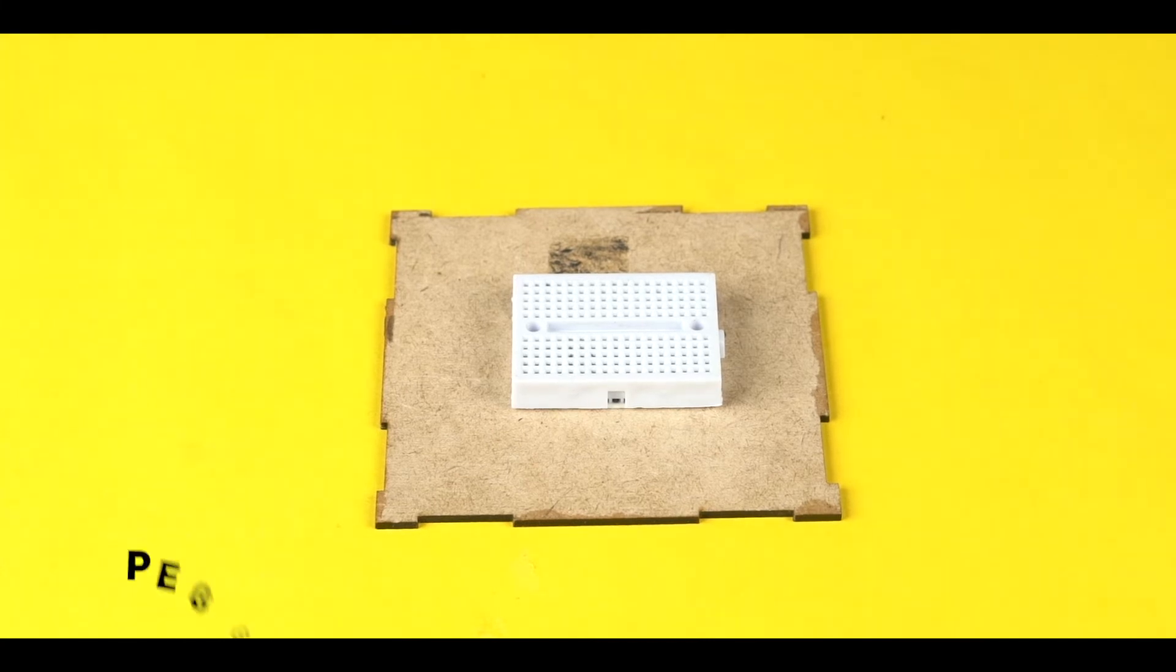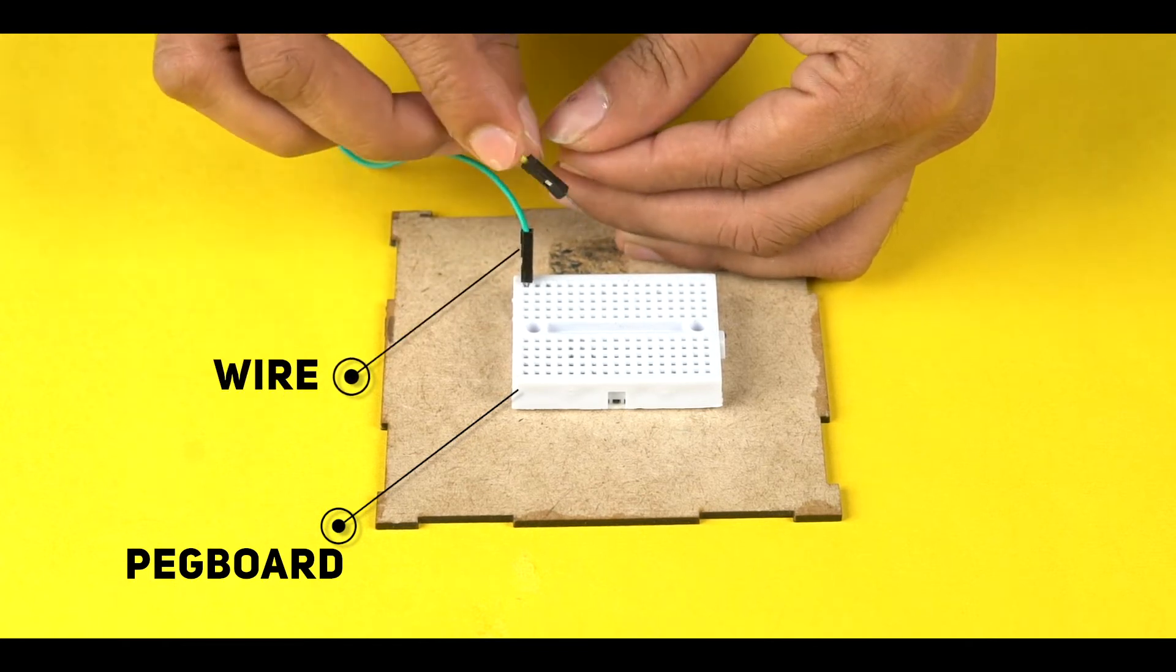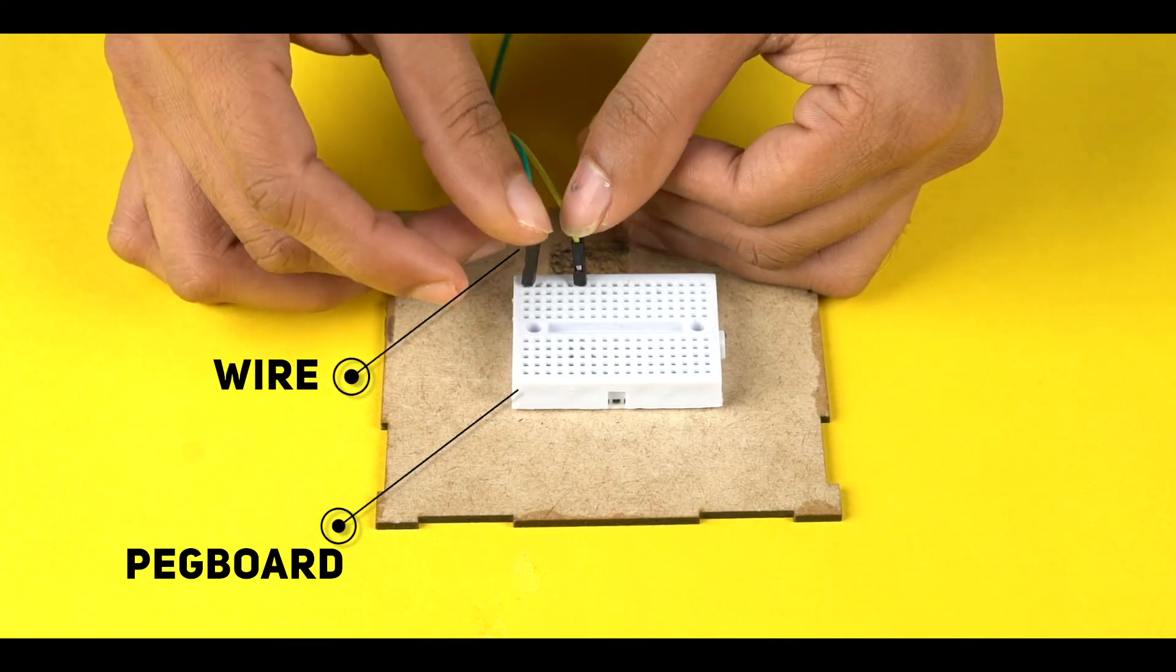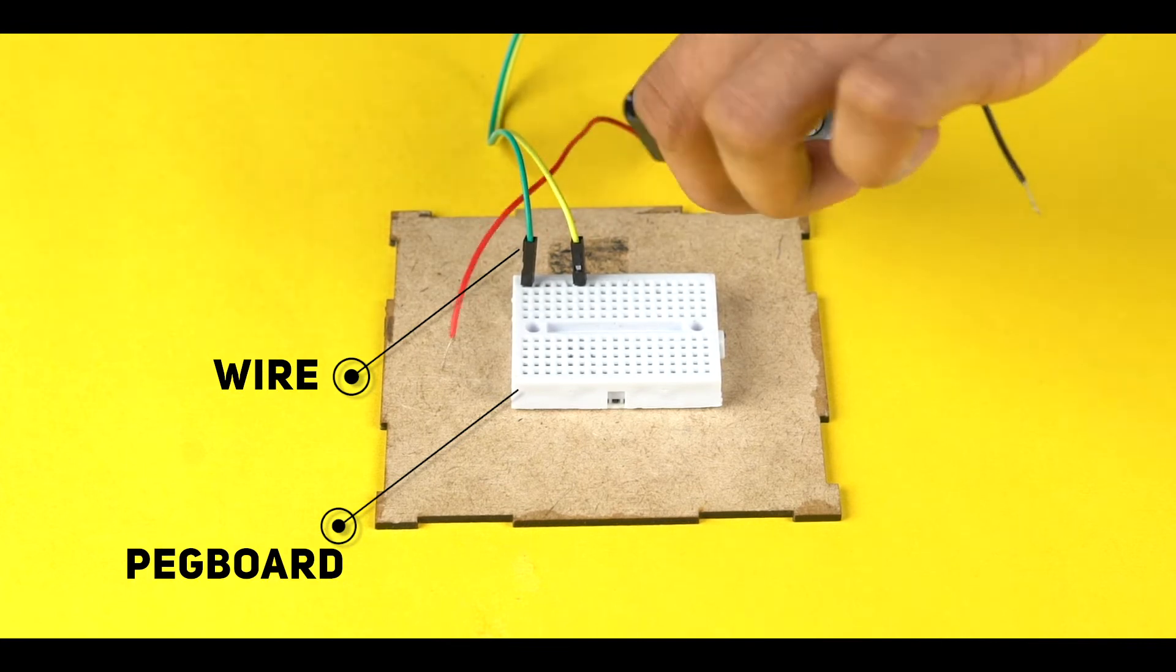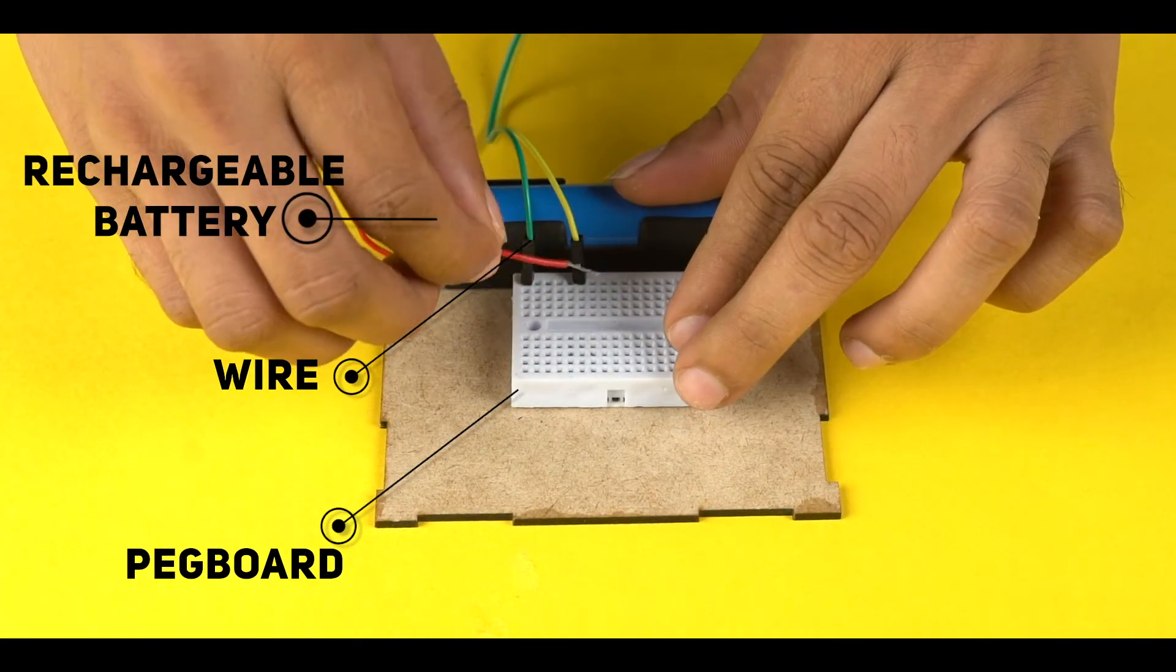First, attach the pegboard to the base of the black box. Attach male to male wire to the pegboard. Plug the rechargeable battery into the pegboard.